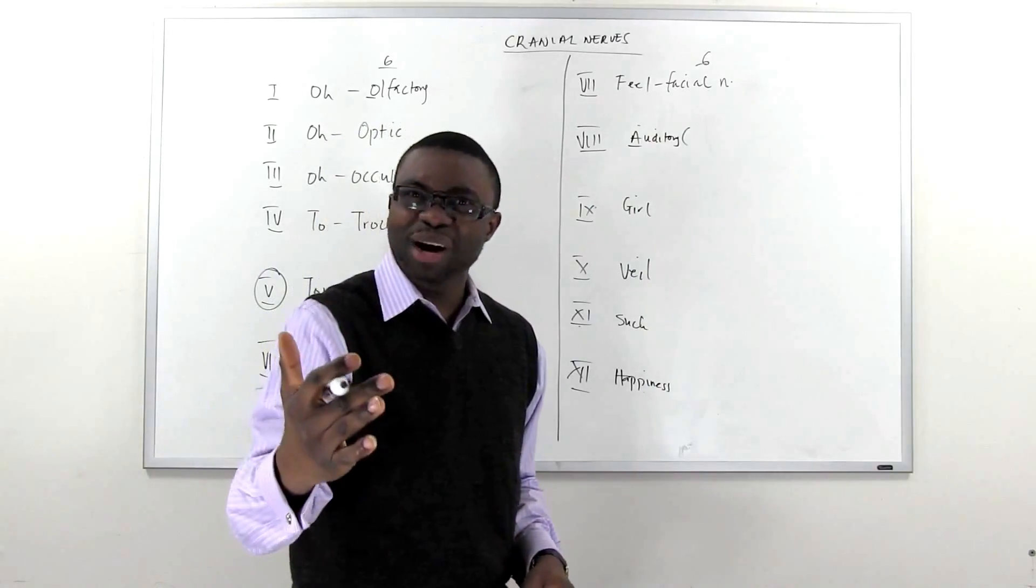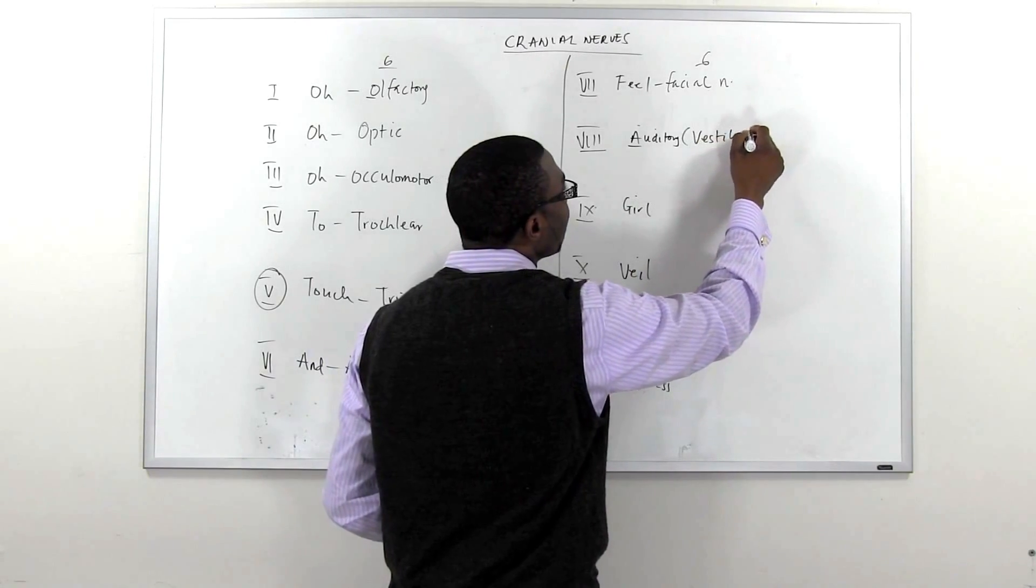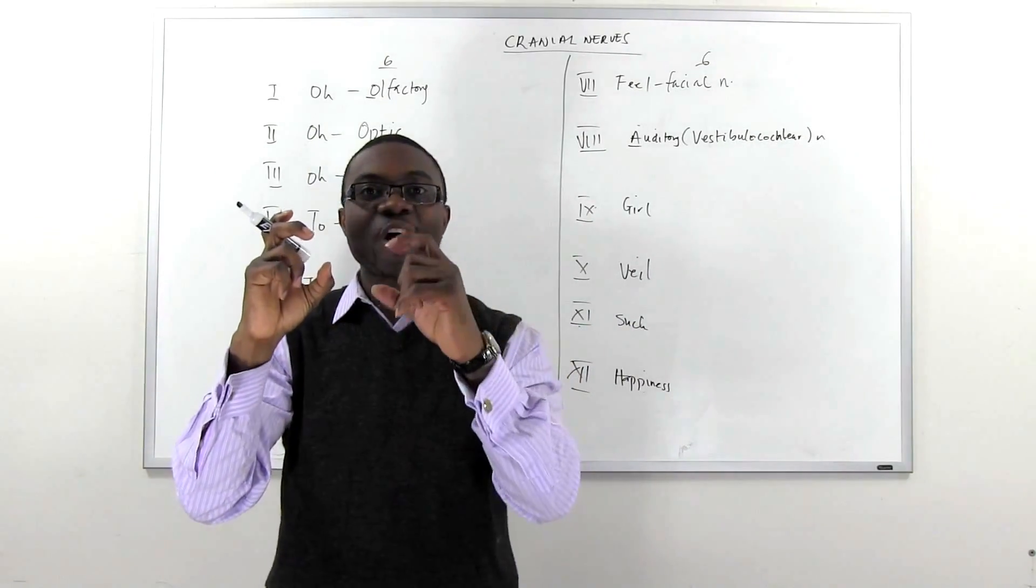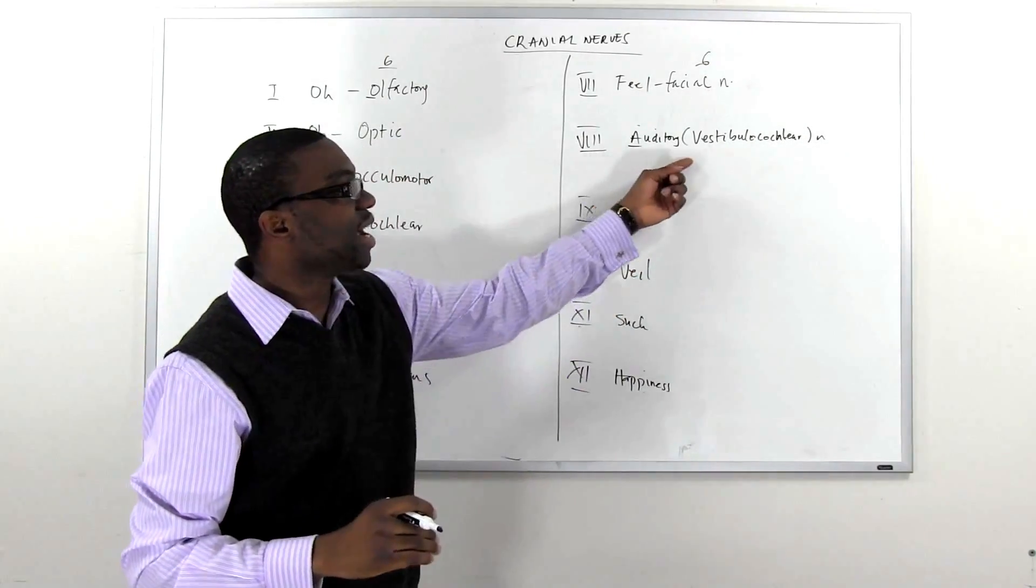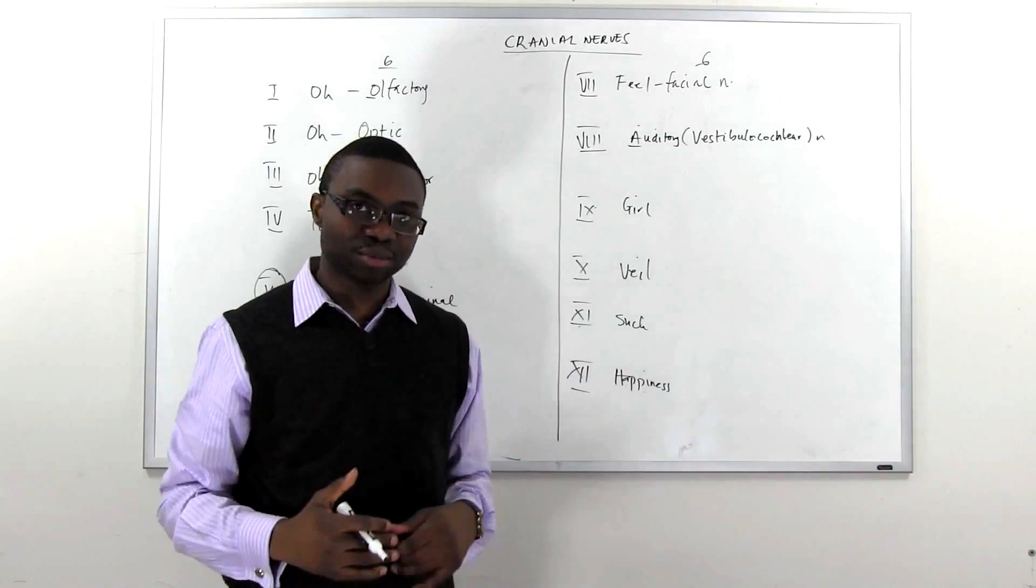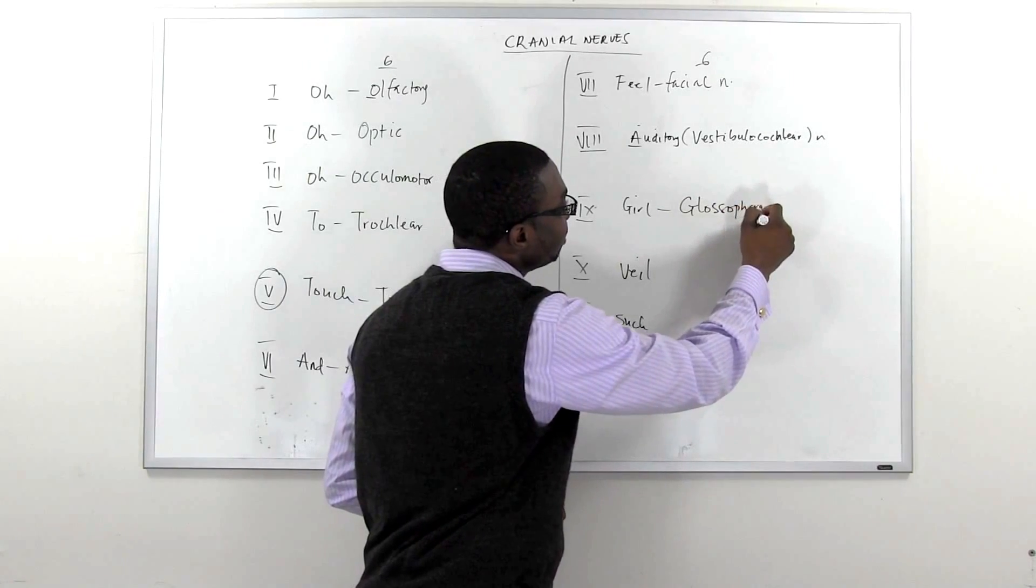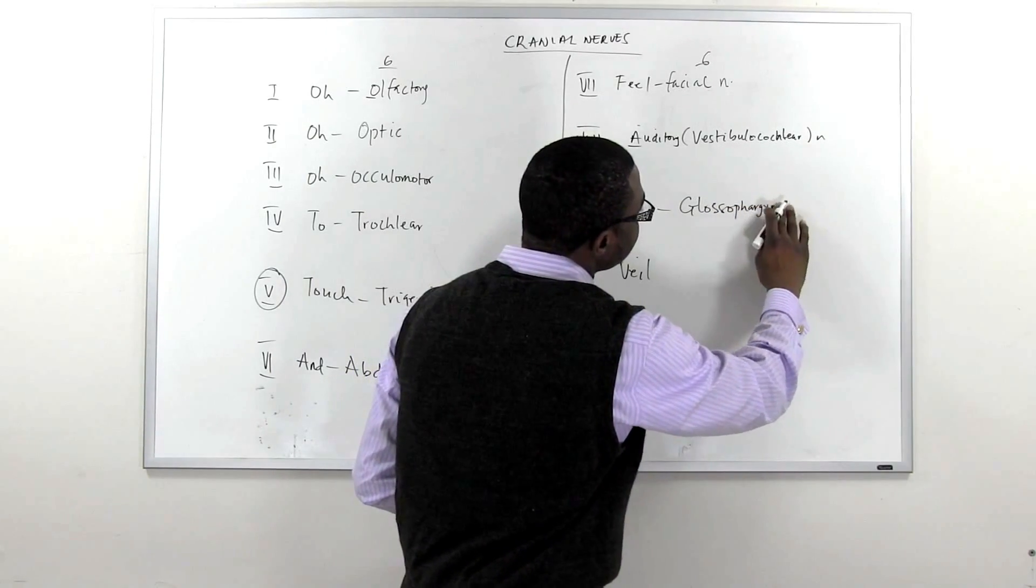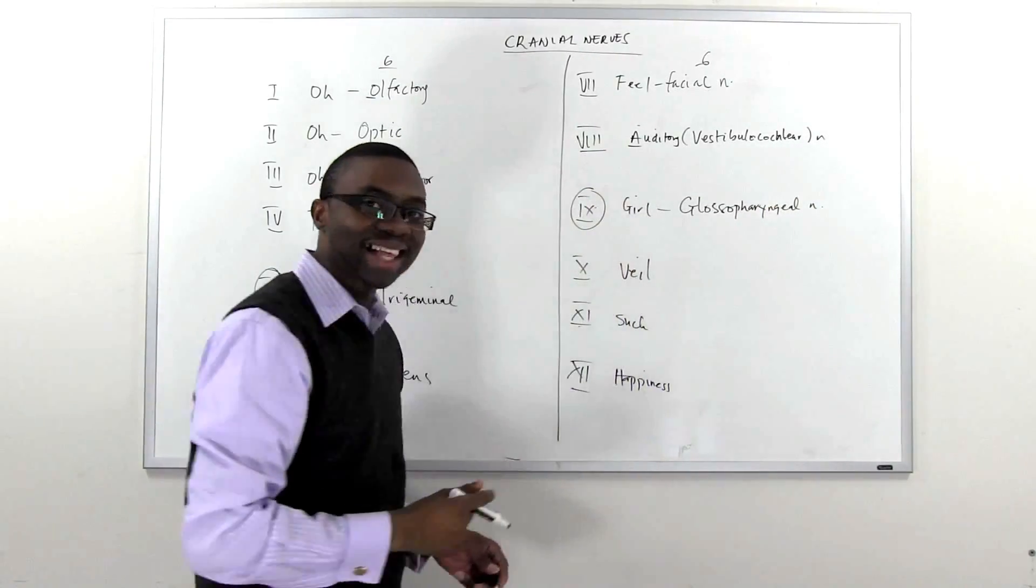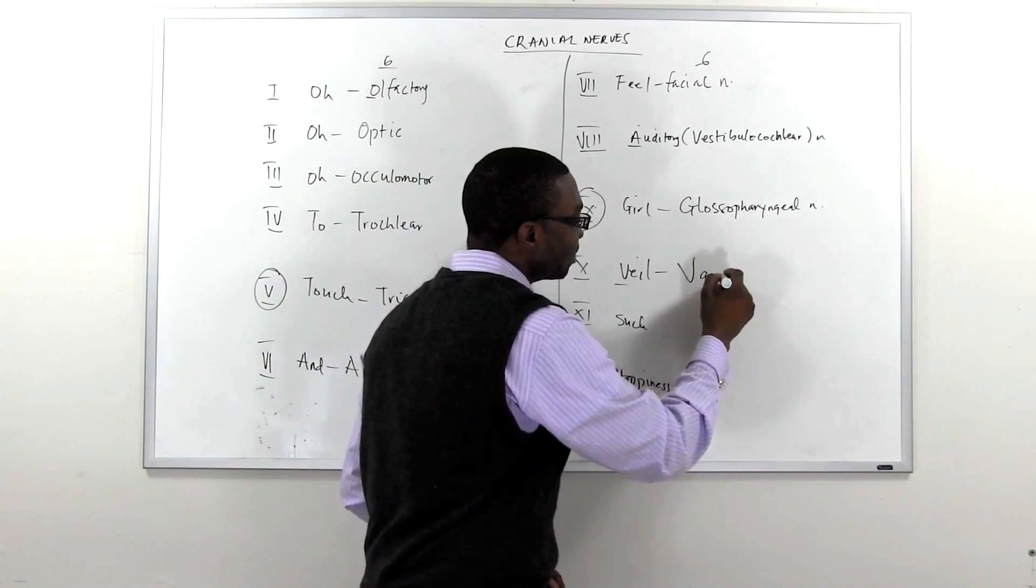But since we don't call it the auditory nerve, you know, like your mom would probably know the answer to that, so we don't want them to know. So we call it the vestibulocochlear nerve because it has the vestibular nerve and the cochlear nerve which is for hearing. We're going to talk about it later. That's the vestibulocochlear. So you have to remember that number eight is auditory but the new name is the vestibulocochlear nerve. And the G is the glossopharyngeal, pharyngeal, pharyngeal nerve. That is number nine, that's the girl.